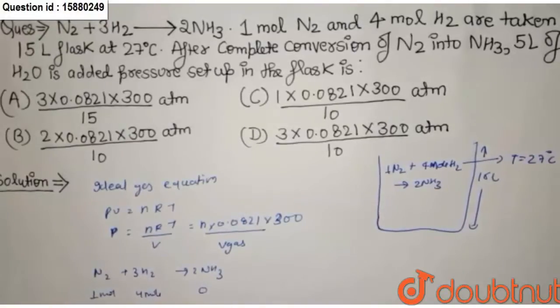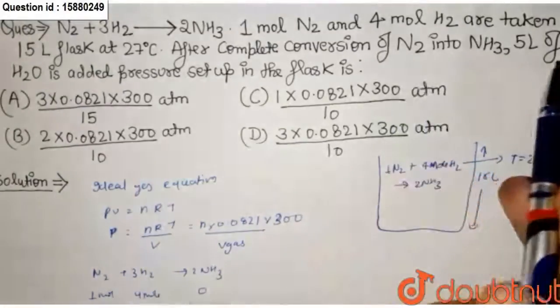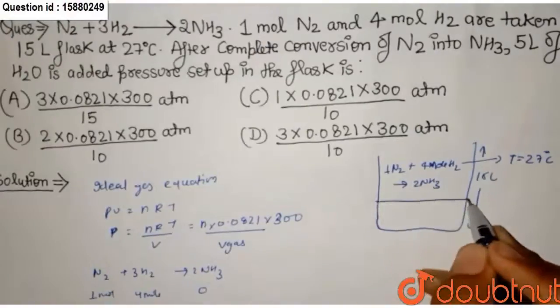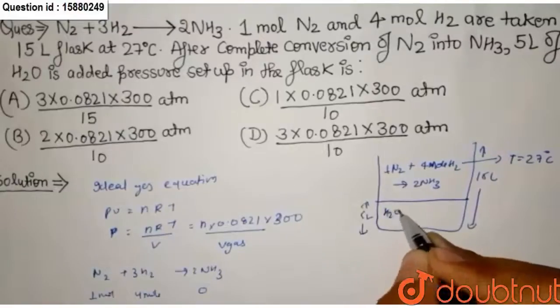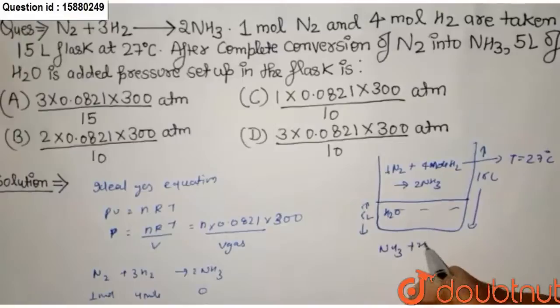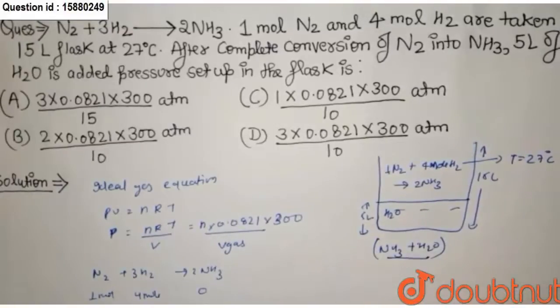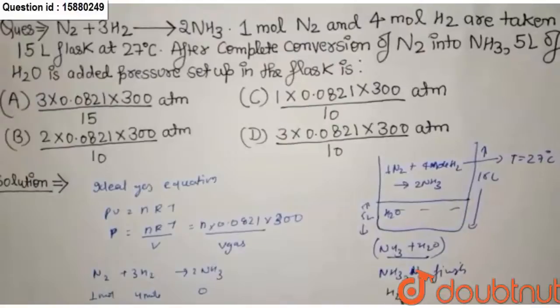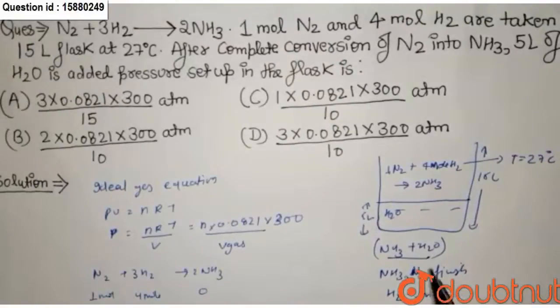1 mole H2 and 2 mole NH3. After conversion, 5 mL H2 added in flask. NH3 is dissolved, now NH3 is not in flask and not N2. These are finished, only H2 is 1 mole which means pressure create.